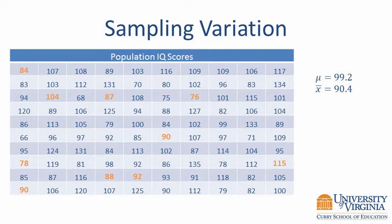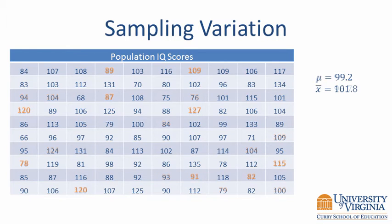What happens when we draw another random sample of 10 students? The sample mean is now 96.7. It is closer to the population mean, but not exactly the same. Chance is the only reason the new sample mean is different from the last one. Chance is also the reason our next random sample will also have a different value. This time the sample mean is slightly above the population mean. Looking at these three samples, the means were 90.4, 96.7, and 101.8.